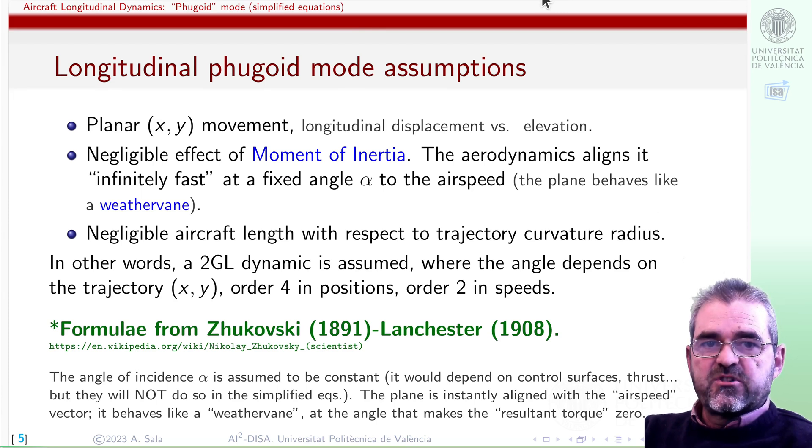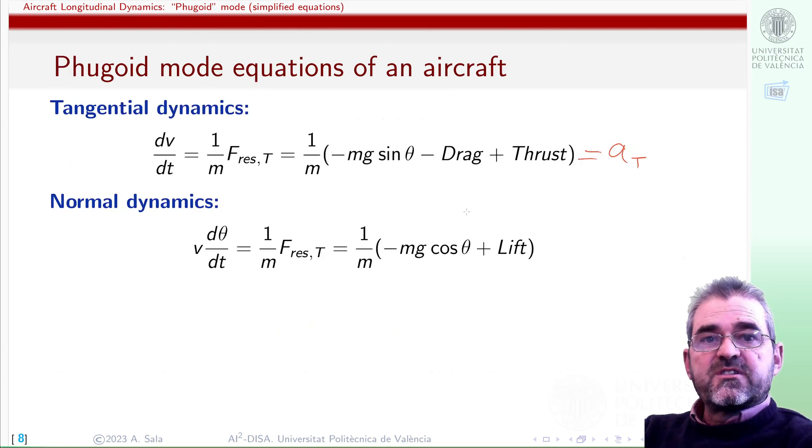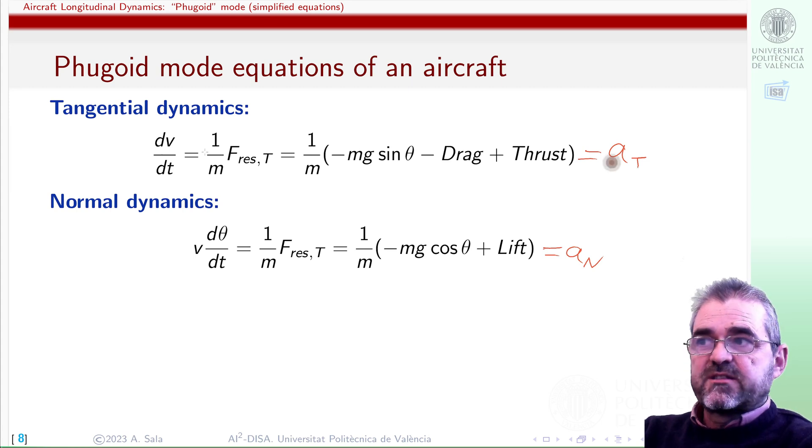Well, with those assumptions and some extra stuff, we could consider the simplified dynamics of the airplane as the dynamics of a point mass, and we derived that tangential acceleration was the derivative of the air speed, and was this force balance.